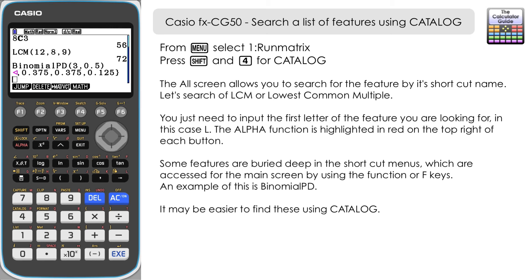Now let me show you where Binomial PD is buried in the shortcut menu. I'd have to press Option, then F5 for Stat, then F3 for Distribution, then F5 for Binomial, and finally F1 for Binomial PD. Which do you think was the easiest way to access that feature? Some people are very familiar with the shortcut menus, and some features aren't buried as deeply. But if you're like me and find it difficult to remember where things are located, the catalogue feature is very useful — you can search by category or alphabetically by name.